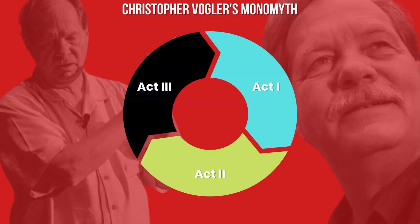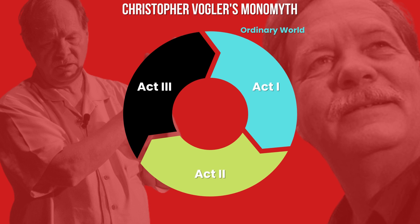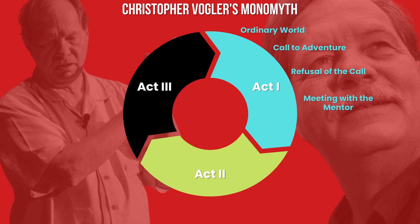The twelve stages of Vogler's hero's journey begins with the ordinary world in Act 1, where the hero is shown in their everyday life. The second stage is the call to adventure, described as the initiating incident of the story. The refusal of the call is next, where the hero experiences hesitation to embark on their quest, followed by the meeting with the mentor. This meeting causes the character to gain confidence, supplies, and knowledge needed to begin their adventure. The last stage in Act 1 is crossing the first threshold, where the hero commits wholeheartedly to their quest.